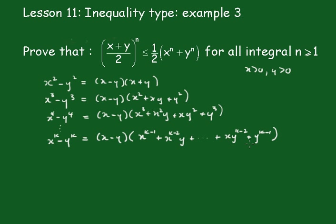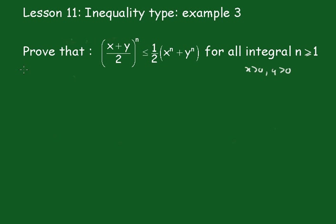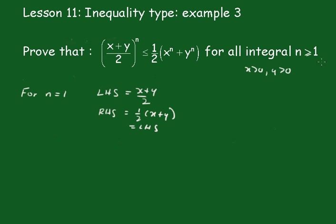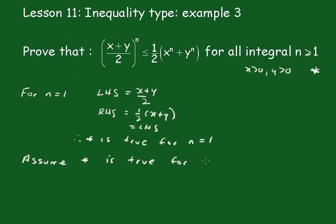We'll be using that identity in the body of the proof. The statement is true for n equals 1. Assume the statement is true for n equals k.